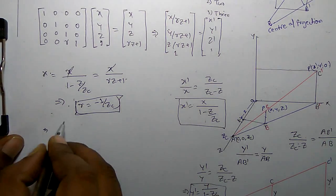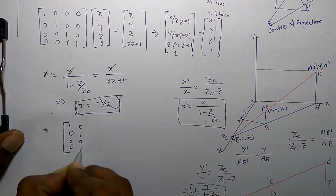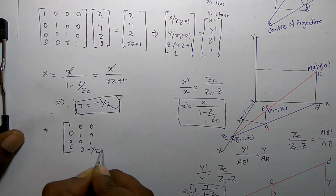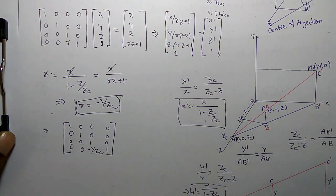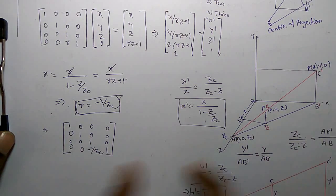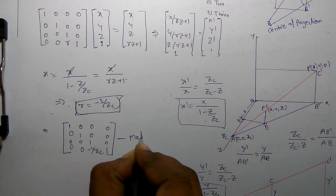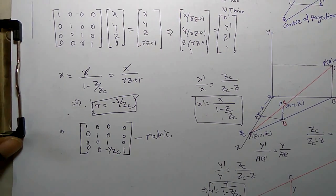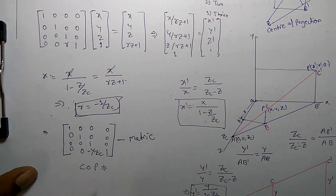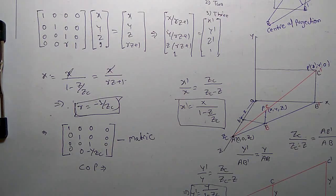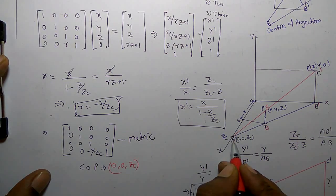The matrix representation of perspective projection is the 4x4 matrix: [1, 0, 0, 0 / 0, 1, 0, 0 / 0, 0, 1, −1/Z_C / 0, 0, 0, 1]. If you want to project an object, you directly multiply it by this perspective projection matrix. This is for the Z=0 plane, where the center of projection is at (0, 0, Z_C).